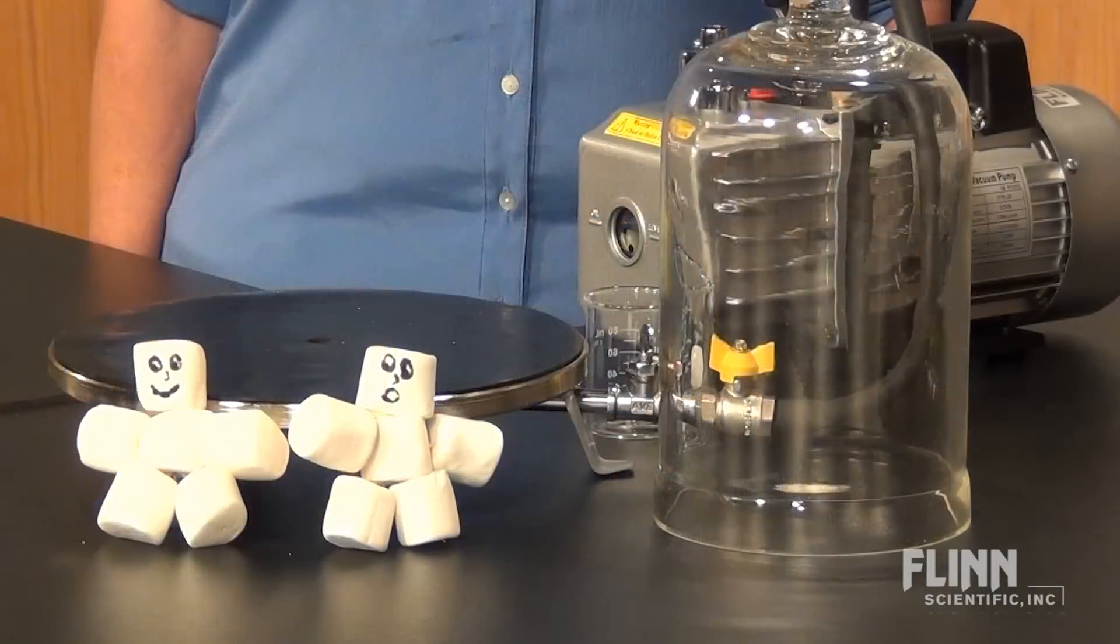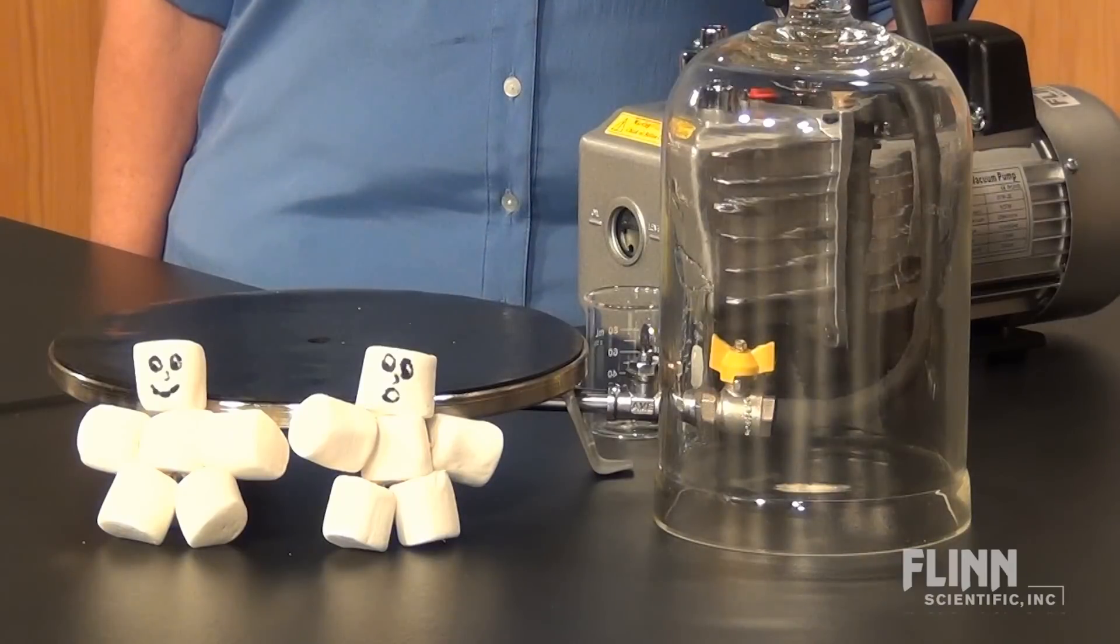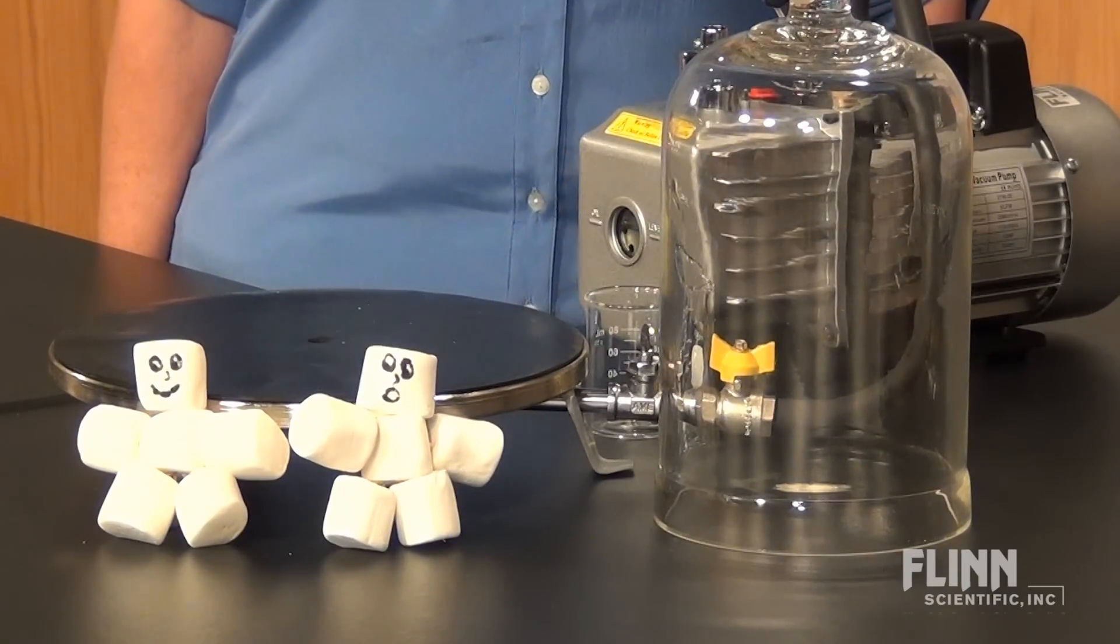Introduce Boyle's Law with this fun visual demonstration. All you need is a vacuum pump and plate, a bell jar, vacuum tubing, and an item made out of marshmallows.